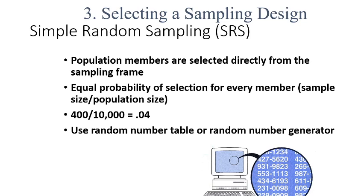You have already covered probability and chance of occurrence in your statistics subject, so I will not repeat that here. The formula for equal probability of selection is: sample size (n) divided by population size (N). For example, if n = 400 and N = 10,000, then the equal probability of selection is 0.04.